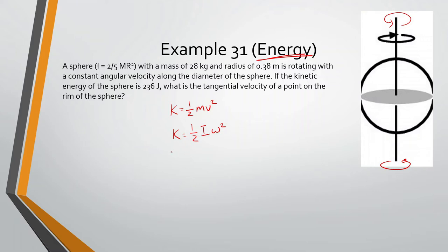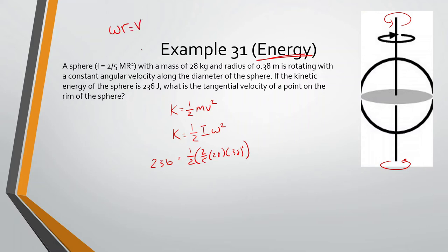We know 236 joules is the kinetic energy. So: 236 = 1/2 × (2/5 × 28 × 0.38²) × ω². Since we're looking for tangential velocity, we use the relationship ω × r = v, so ω = v/r. We substitute omega with v/r, and since both are squared, the r² terms cancel out.